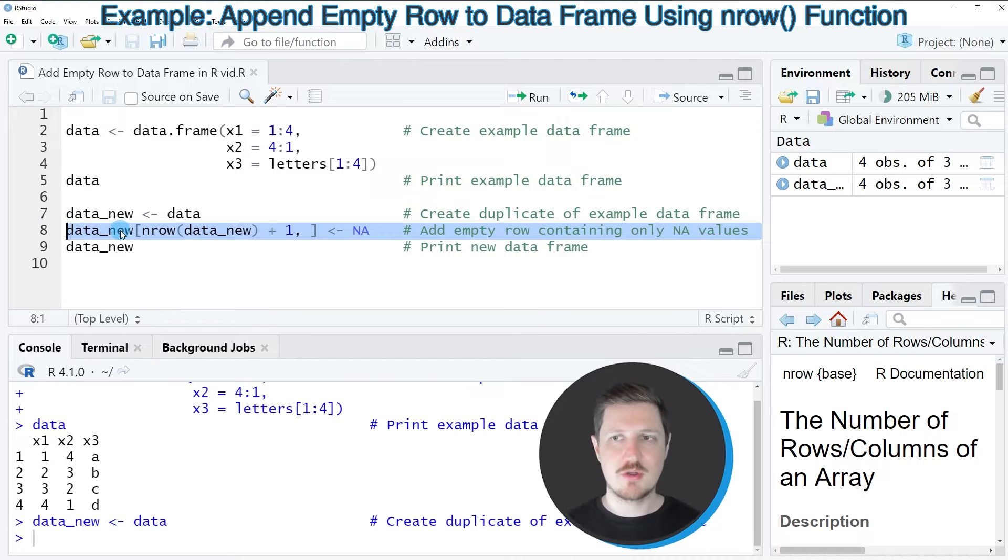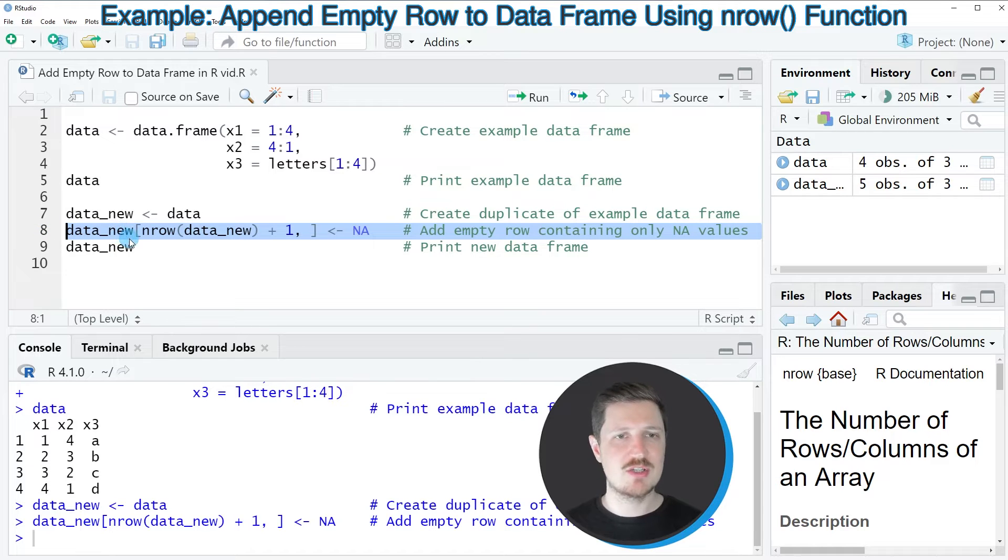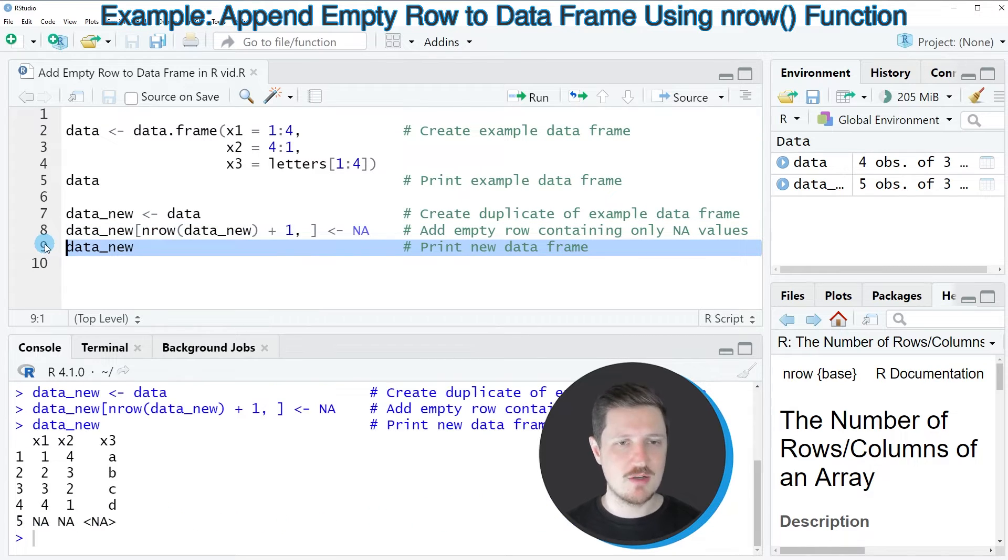After running line 8, our data frame is updated, and we can see that by printing our new data frame to the RStudio console. After running line 9, you can see at the bottom that our new data frame contains the same values as our input data frame. However, in addition to that, we have added an empty row that contains only NA values.